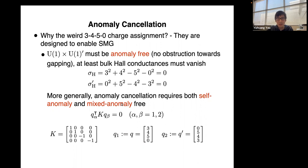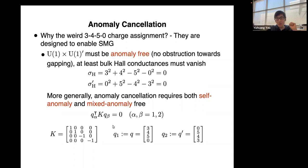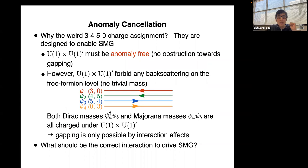More generally, we must also check for mixed anomaly between U(1) and U(1)'. The most systematic way to check anomaly cancellation is to take the charge vectors Q corresponding to each U(1) symmetry and require Q^T K Q = 0, where K is the K-matrix describing the chirality of the fermions. One can verify that the 3-4-5-0 charge assignment satisfies this anomaly-free condition.